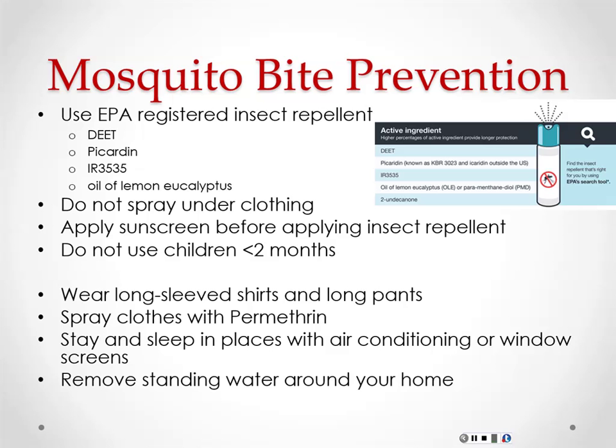Regarding a vaccine: it's still in the works. There's one in phase one clinical trials right now. It's similar to the yellow fever vaccine, which allows for a relatively quick adaptation for Zika. They're hoping to develop it much more quickly than HIV, which has been around 30 years with no vaccine. There's no vaccine yet, but it's a hopeful development.